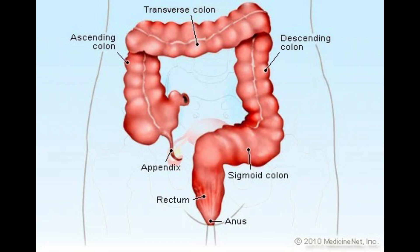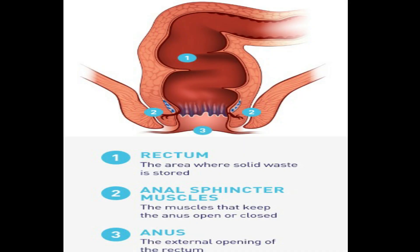The anorectal line separates the anus from the rectum. Tough tissue called fascia surrounds the anus and attaches it to nearby structures. The rectum is a straight 8-inch chamber that connects the colon to the anus. Its job is to receive stool from the colon, signal that there is stool to be evacuated, and hold the stool until evacuation happens.